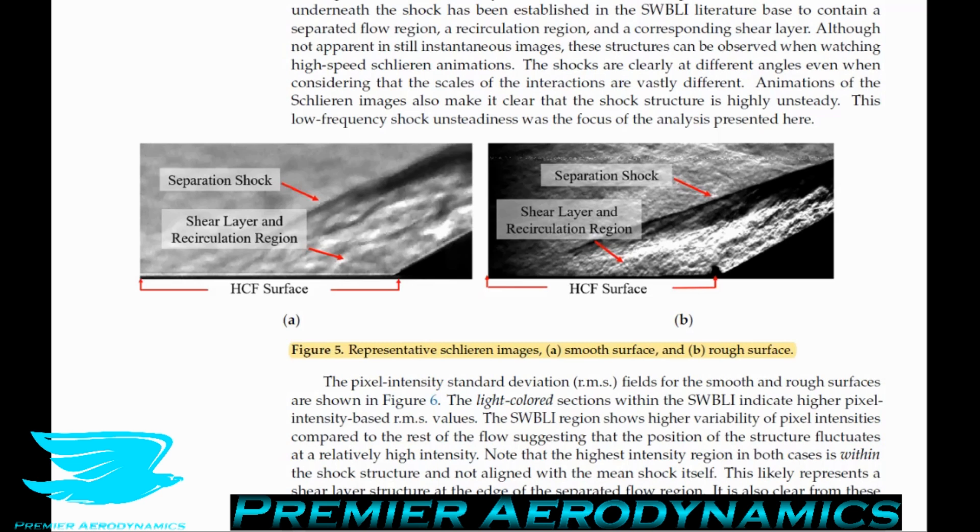They say the separation shock is clearly visible for each case upstream of the flare. The area underneath the shock has been established in the shockwave-boundary layer interaction literature to contain a separated flow region, recirculation flow region, and a corresponding shear layer. Although not apparent in the still instantaneous images, these structures can be observed when watching high-speed Schlieren animations. The shocks are clearly at different angles, even when considering the scales of the interactions are vastly different. Animations of the Schlieren imaging also make it clear that the shock structure is highly unsteady. This low-frequency shock unsteadiness was the focus of the analysis presented here.